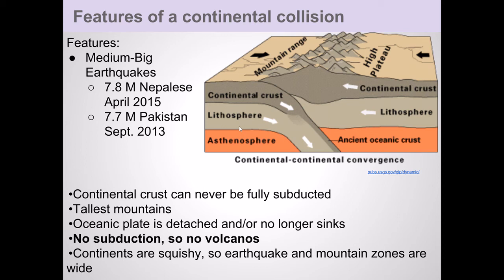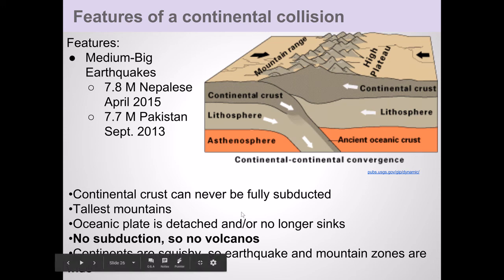Continental crust can't really be subducted. So instead of subducting, it goes up and piles on top of itself when two plates collide. If you don't have subducting, you're not taking water down into the mantle area, meaning you're not creating a volcanic arc. So in this kind of collision, you do not have volcanoes — just earthquakes.